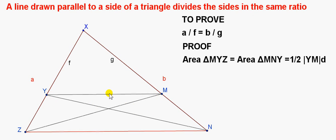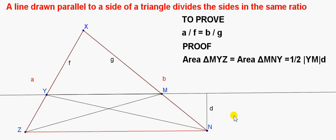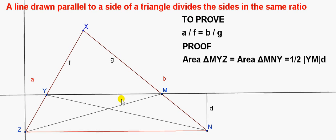Both triangles stand on the same base, Y, M — so they have the same base. To find the perpendicular height of triangle M, Y, Z, we have to draw a perpendicular from Z to the line Y, M extended. I've shown this for the other triangle, M, N, Y. This distance, D, is the perpendicular height of that triangle, and D is the same for both triangles because the two triangles lie between parallel lines — between lines Y, M and Z, N — which means their perpendicular heights are the same.